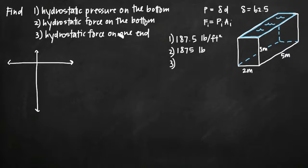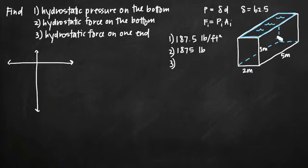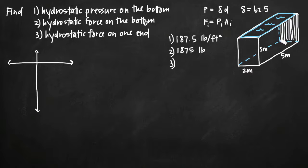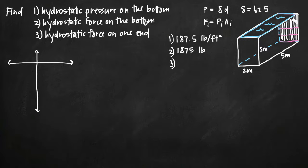For the next part, we need to find hydrostatic force on one end of the tank. That's a little bit trickier because the end of the tank is a vertical plate. The end we're talking about is the 2 by 3 face, not the 3 by 5 area. The tricky part about finding hydrostatic force on a vertical plate is that we can't just find force at one level — we need to find the force at the bottom, at every intermediate depth, and at the top, because this vertical end has force applied against it at every depth.